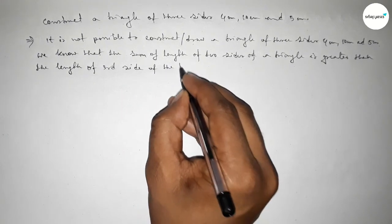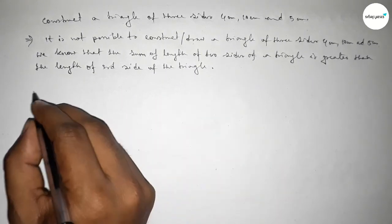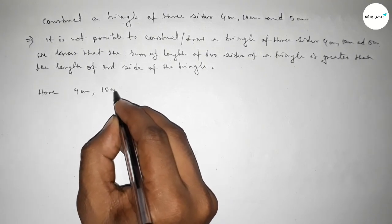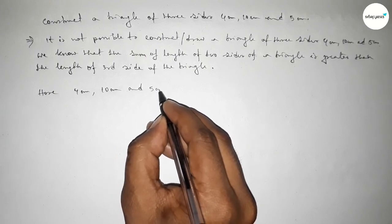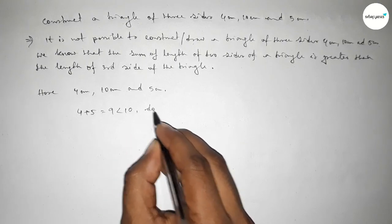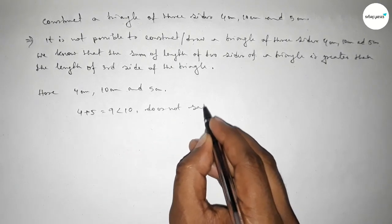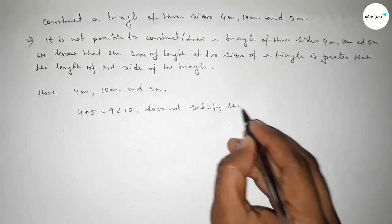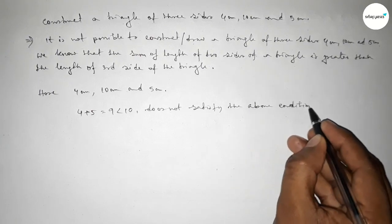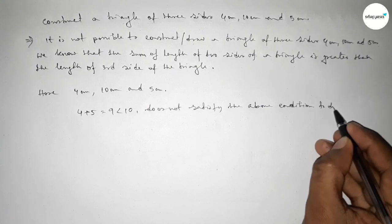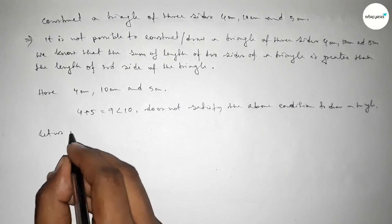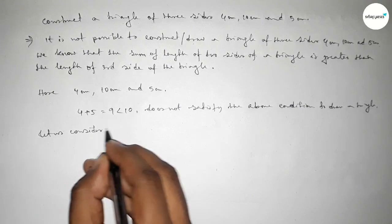Here the given three sides are 4 centimeter, 10 centimeter, and 5 centimeter. So 4 plus 5 equals 9, which is less than 10. So it does not satisfy the above condition to construct or draw a triangle by the help of 4 centimeter, 10 centimeter, and 5 centimeter sides.